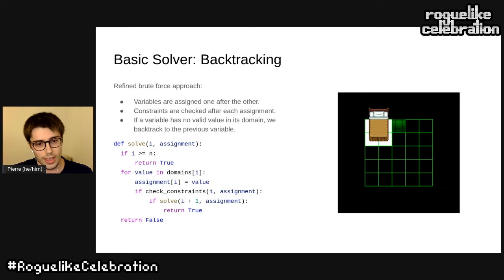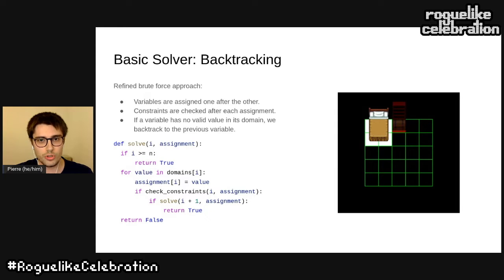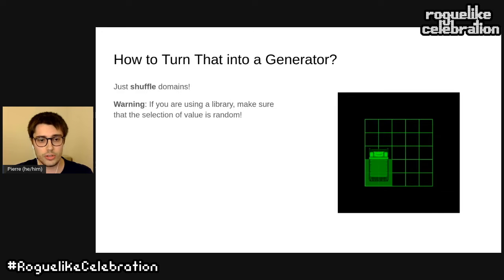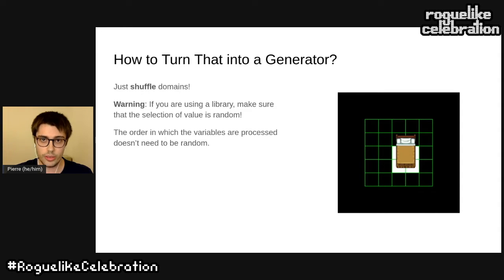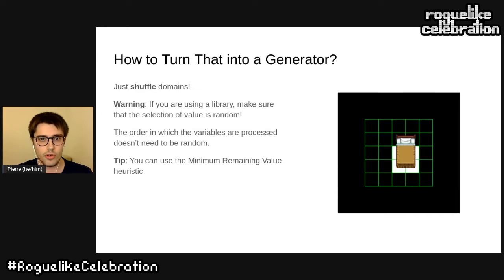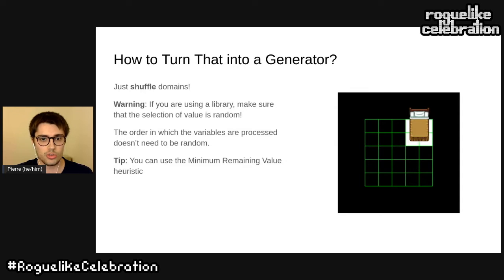The only issue is that since we always process values in the same order, the algorithm is deterministic and will always return the same solution — not ideal for a procedural generator. But the fix is very simple: just shuffle the domains before running the algorithm. If you're using an external library, make sure the value selection process is random. We can also notice that the order in which we process variables doesn't need to be random. In fact, processing first the variables with the smaller domains can significantly speed up the solver, as they are more constrained. This is called the minimum remaining value heuristic.